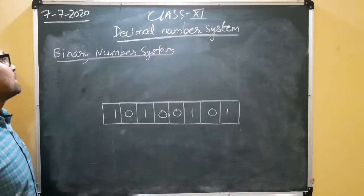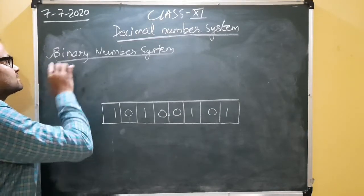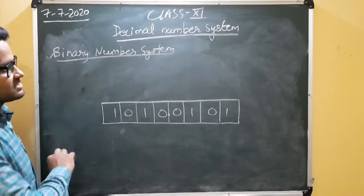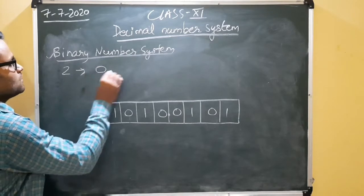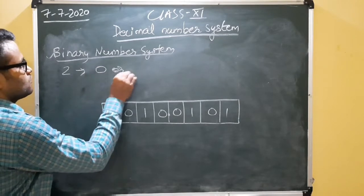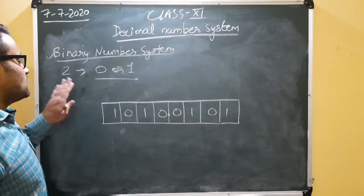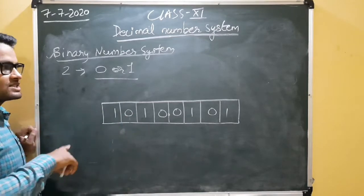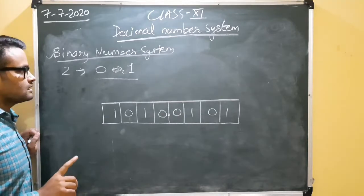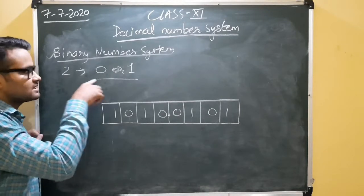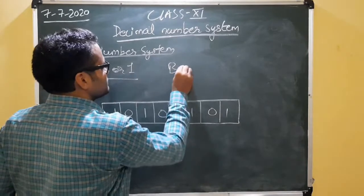Now we will learn the binary number system. As the name suggests, binary means only two numbers can be used: 0 or 1. In the earlier decimal number system we used 10 digits, but here we use only two digits. So the base is 2.